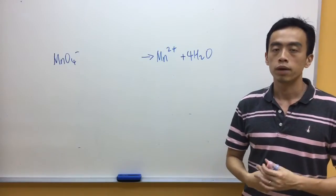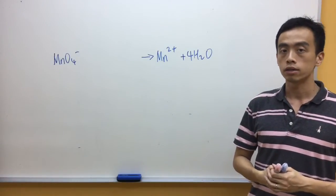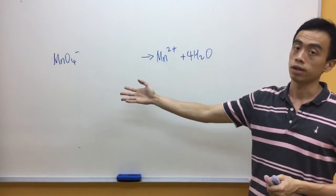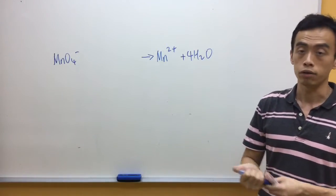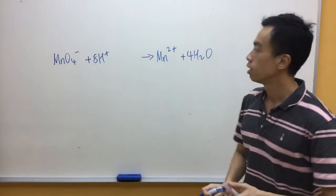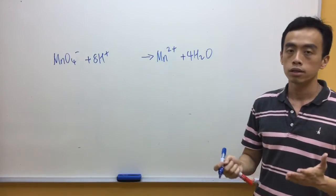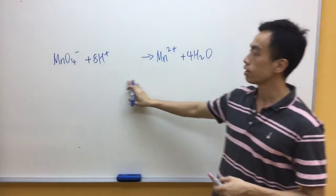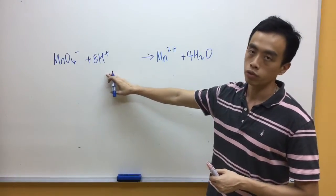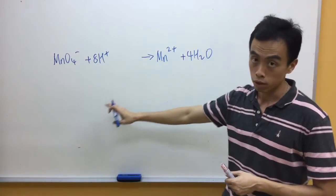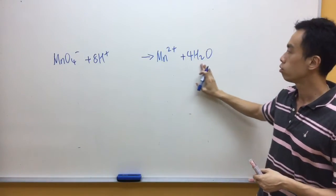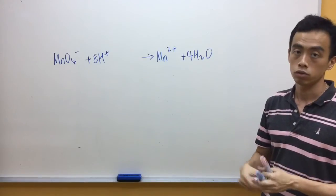Now, the third step: I have to balance hydrogen using H⁺. I have 8 hydrogen on the right-hand side, so I have to put 8 H⁺ on the left-hand side to balance the hydrogen. Now, the last step is to balance the charges. On the left-hand side I have 1 MnO₄⁻ and 8 H⁺.